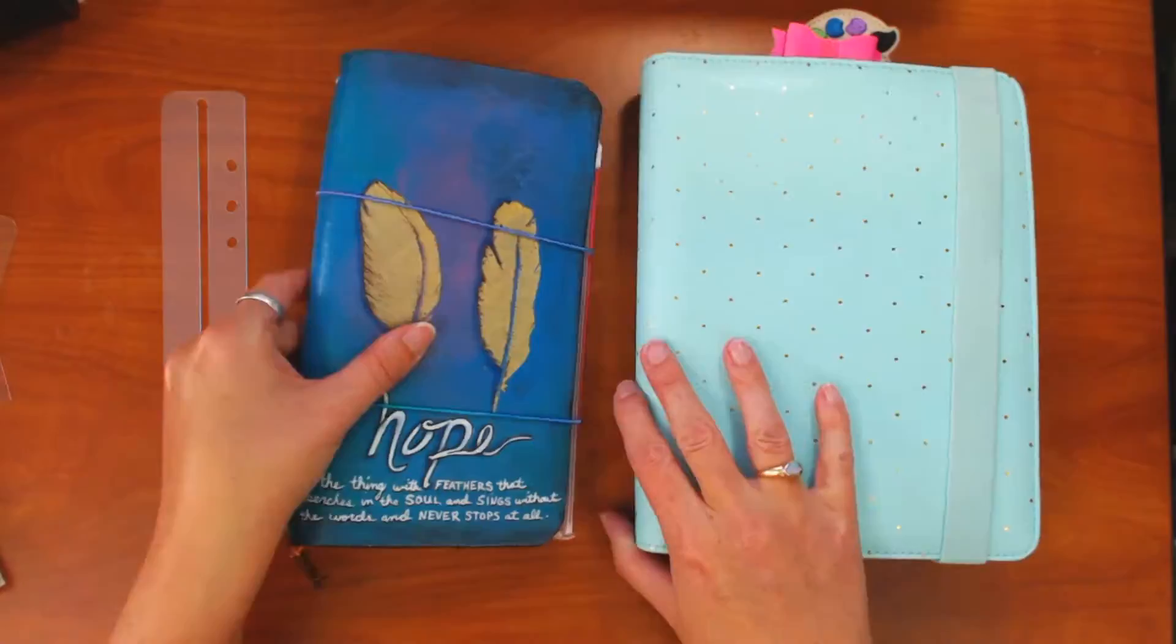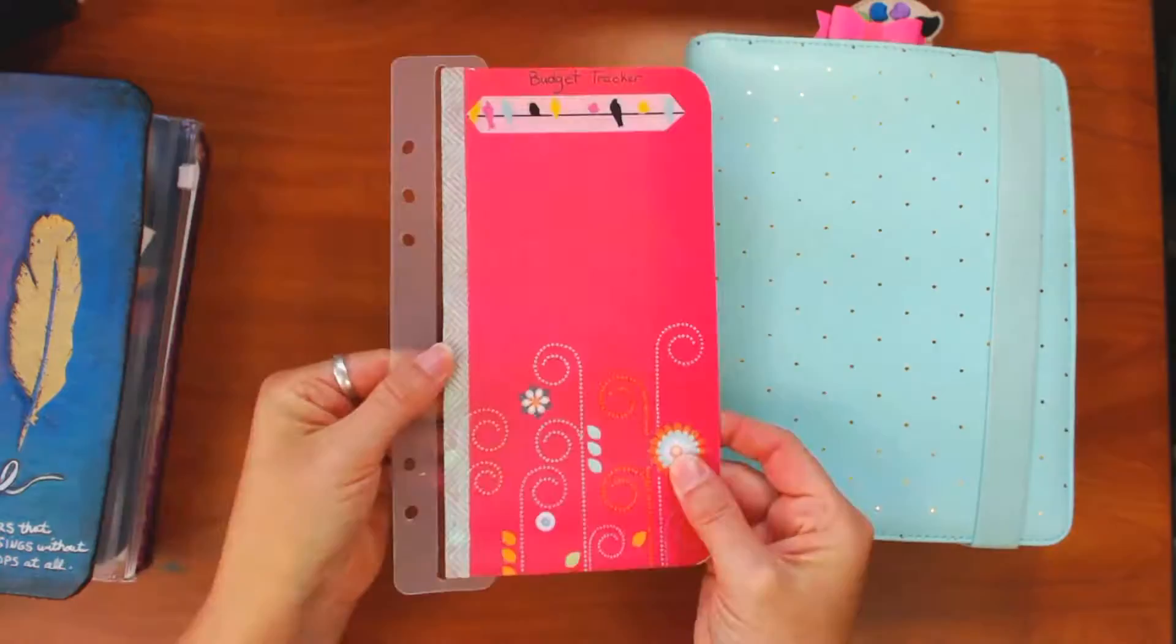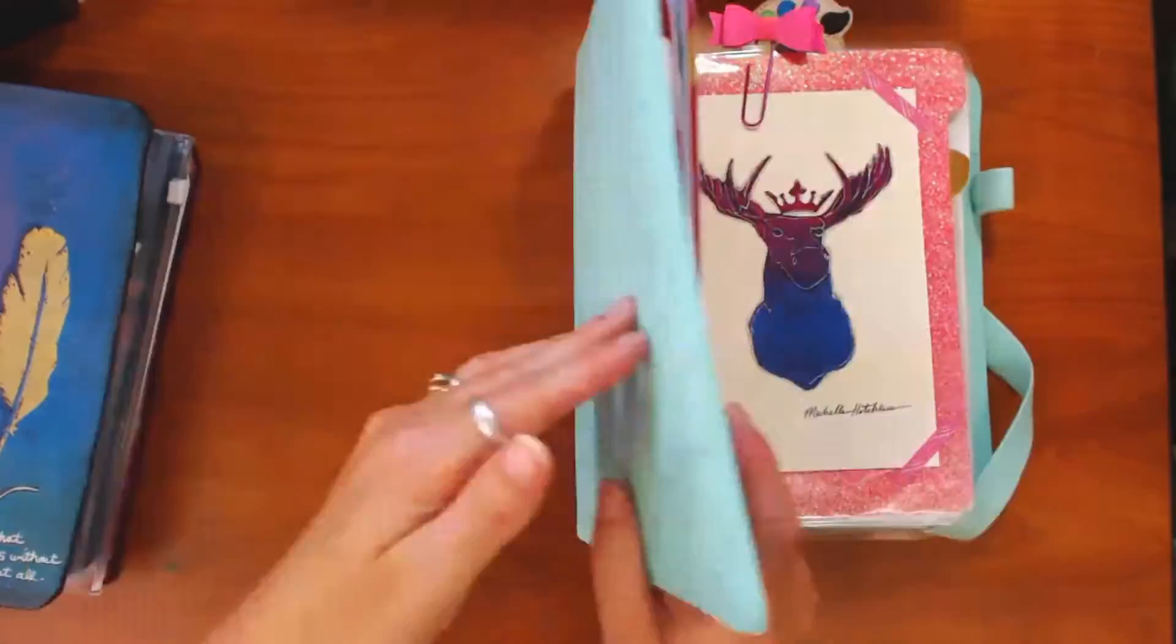Do you ever wish you could take your Dory insert and place it in your ring planner or your disc bound planner without punching holes? Well, here's a quick and easy DIY to make adapters to let you do just that.